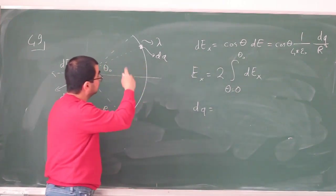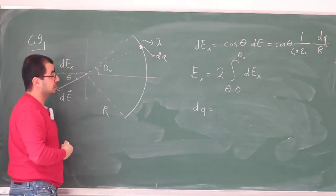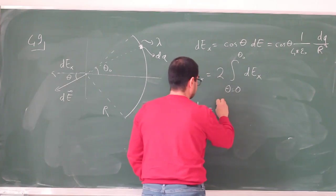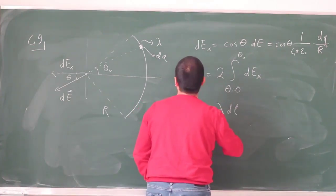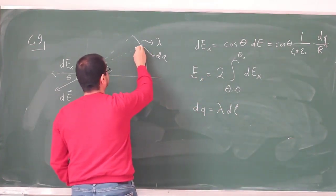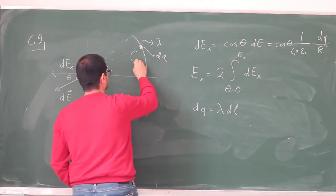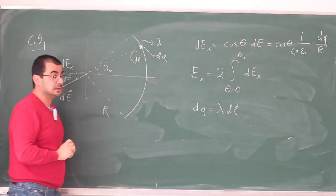Well, dQ, because this is a one-dimensional continuous charge distribution, is just going to be λ dℓ, where dℓ is the length of this little segment that we are taking and adding up.